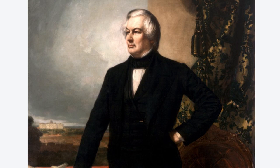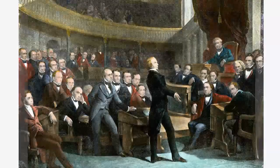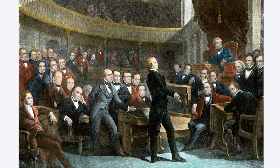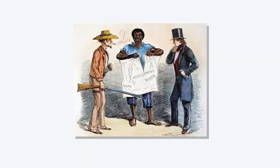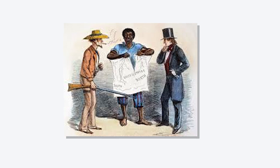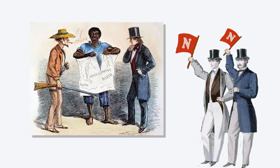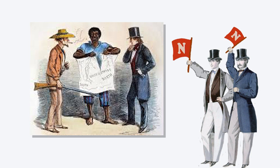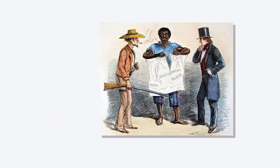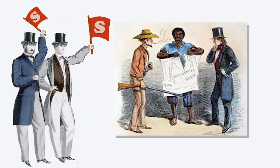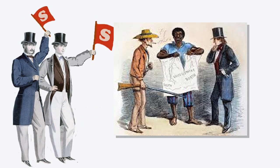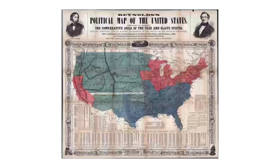President Fillmore is in office, and he's the one who actually signs the different pieces of the Compromise of 1850 into law. This is the antebellum era — the time period leading up to the Civil War. There are parts of the Compromise of 1850 designed to make northerners in free states happy, and parts designed to make slave owners in the southern slave states happy too.